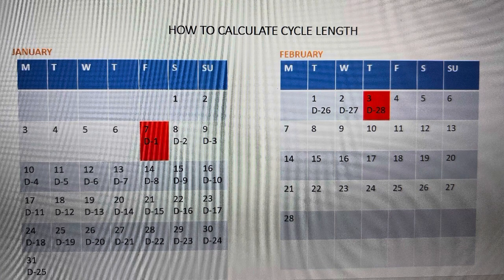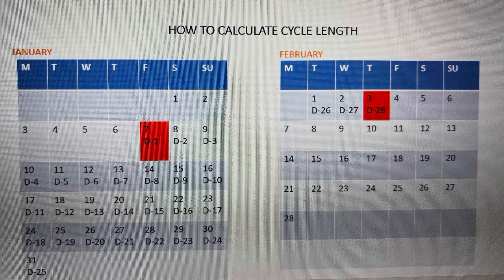Having said this, let us get right into the practicals. We're going to look at a practical case using a lady named Ifi, using her menstrual flow dates for January and February as displayed on the screen. Her start date for January was the 7th, while her start date for February was the 3rd. To calculate her cycle length, the start dates are what we need — we count the number of days from January 7th to February 3rd.